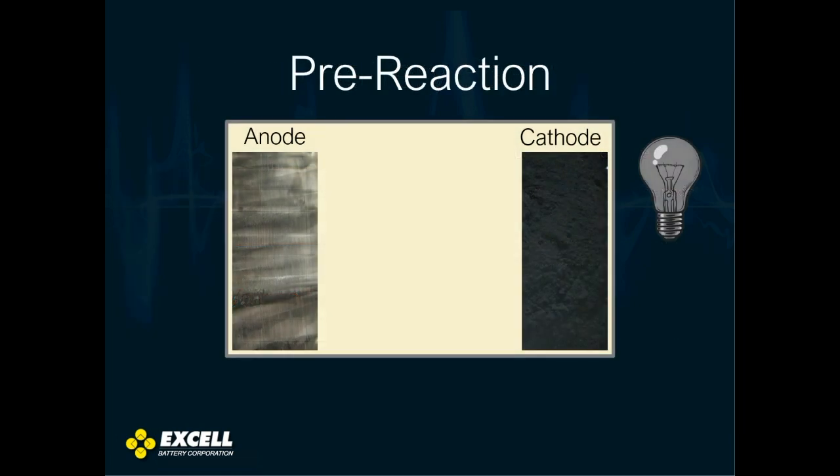We have here a picture of the inside of a cell where we have the lithium on the left, which is the anode, and the carbon cathode on the right. The light bulb is our graphic showing what happens when current is applied to the cell — it's going to get brighter as time goes on.